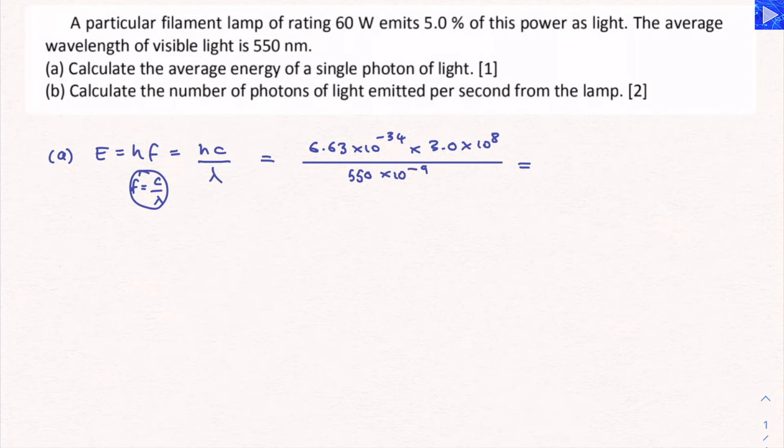Substitute all the values into your calculator and you're going to get 3.616 times 10 to the minus 19 joules. We'd want to match the number of significant figures given to us in the question. 550 is probably a 2SF value. I'm going to write 3.6 times 10 to the minus 19 joules for the final value. If you were to write that to 3SF, you wouldn't be penalized anyway.